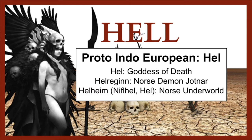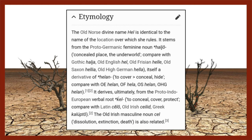Hell actually has a pagan origin, as do many words used in the English Bible — a lot of theological terms derive from pagan perspectives rather than Christian or biblical origins. The old Norse divine name 'Hel' is identical to the name of the location over which she rules. It stems from the Proto-Germanic feminine noun 'halijō,' meaning 'concealed place' or 'the underworld,' itself a derivative of 'helan' meaning 'to cover, conceal, or hide.'